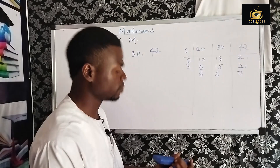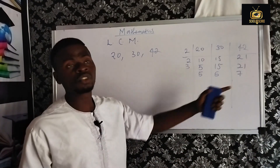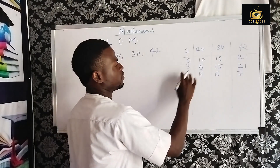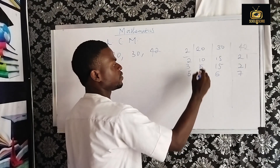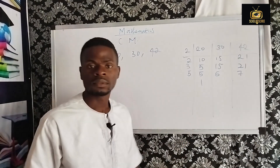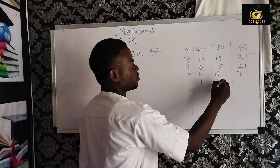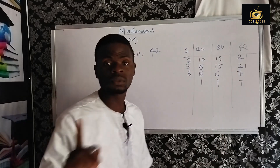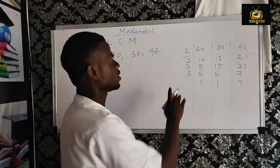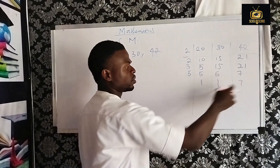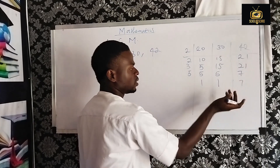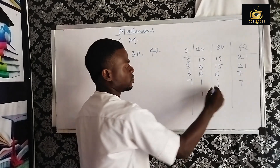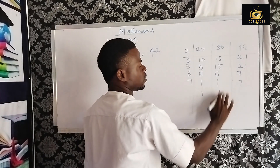Can 3 go into any of these numbers — 5, 5, 7 — again? No. So the next prime number is 5. 5 into 5 gives 1, write 1; 5 into 5 gives 1; 5 into 7 — just write 7 because it gives remainder 2. The next prime number is 7. 7 into 1 write 1; 7 into 1 write 1; 7 divided by 7 is 1.